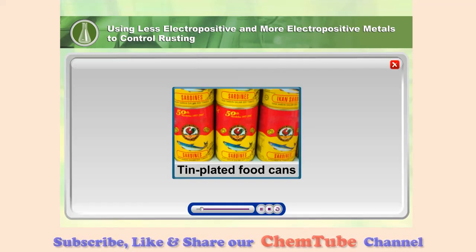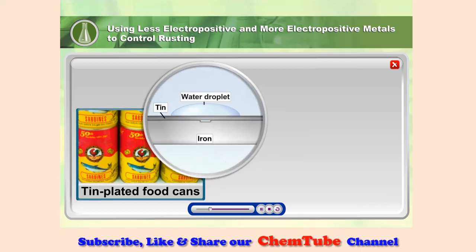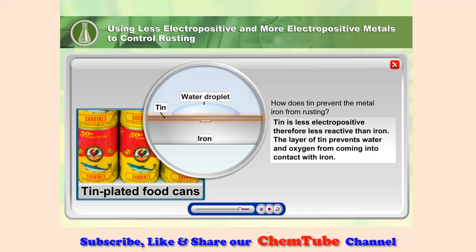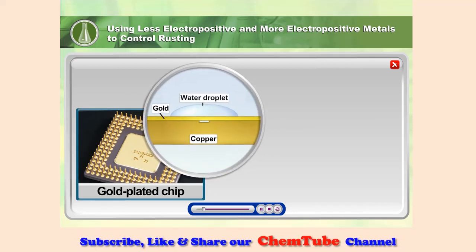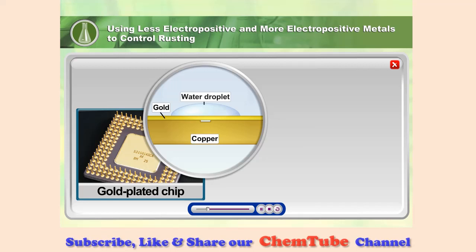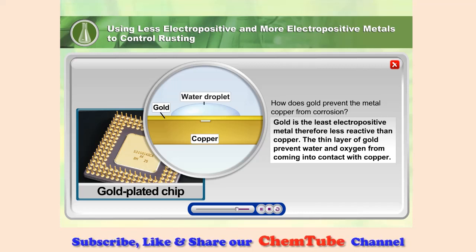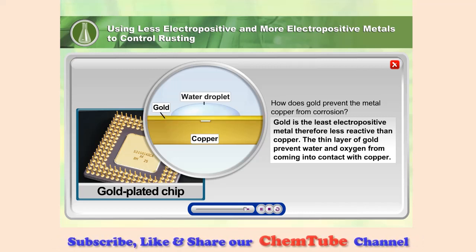Metal cans that are used to keep food such as sardines are made from iron metal plated with tin. Tin is less electropositive, therefore less reactive than iron. The layer of tin prevents water and oxygen from coming into contact with iron. Gold-plated microprocessor chips use a thin layer of gold to prevent the copper beneath from corrosion. Gold is the least electropositive metal, therefore less reactive than copper. The thin layer of gold prevents water and oxygen from coming into contact with copper.